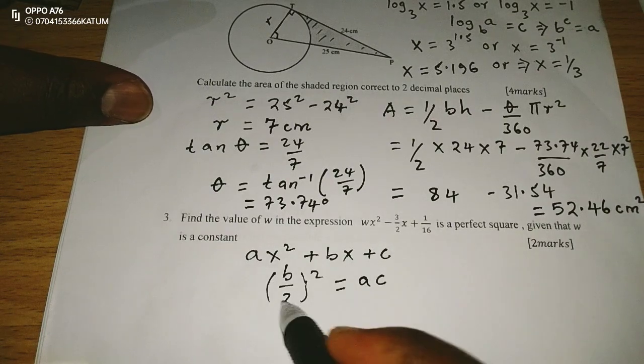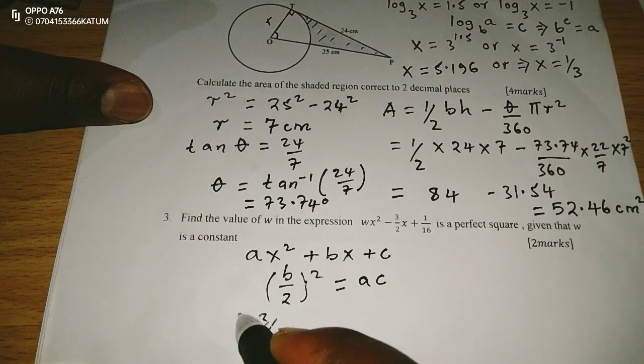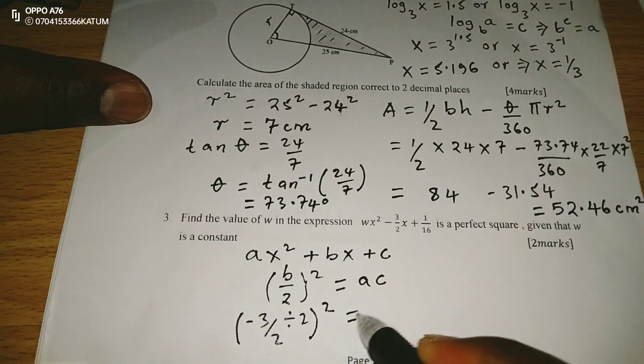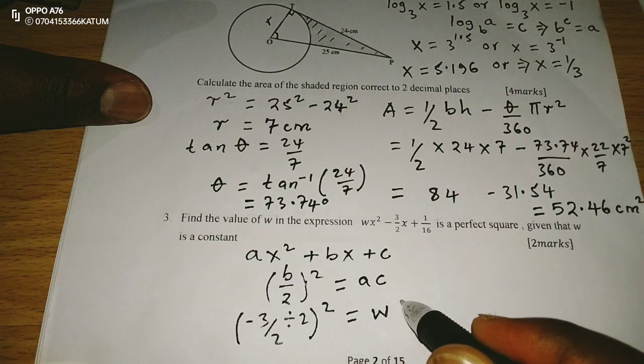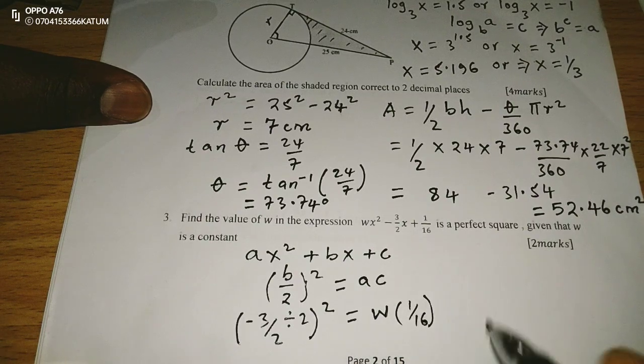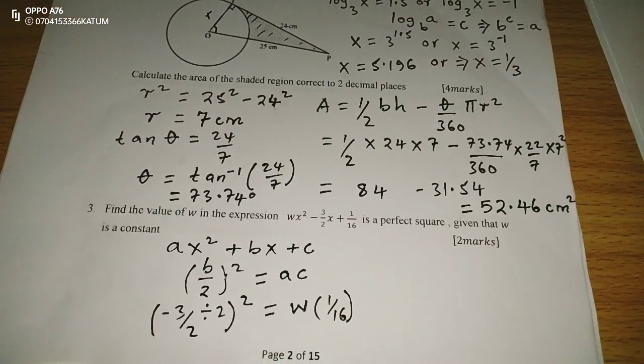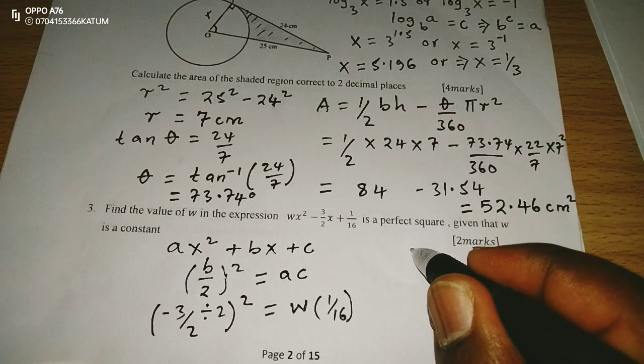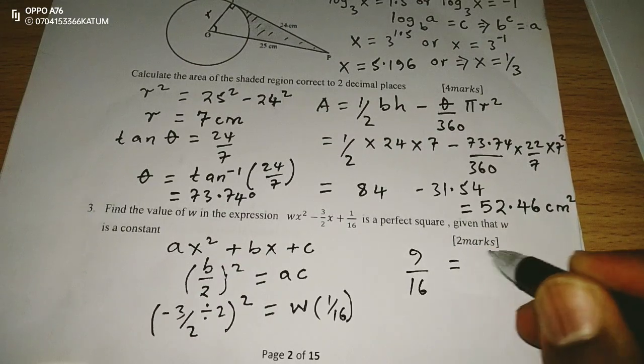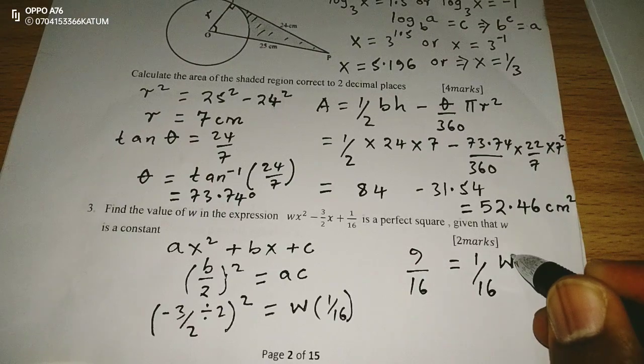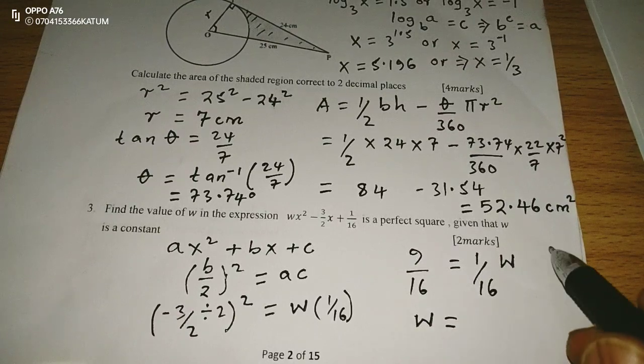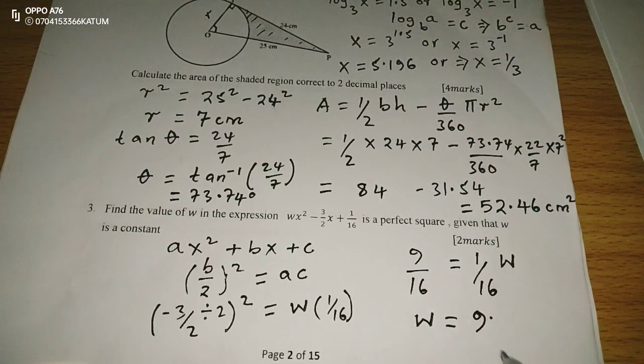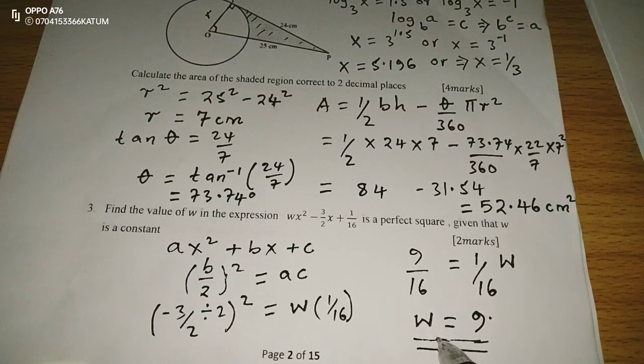So, applying the same for the above expression, which is a perfect square, I should say negative 3 out of 2, which is our b, divided by 2, then squared, should give us the value of a, which is w, multiplied by c, which is 1 out of 16. So, when I evaluate this, I'm going to have negative 3 out of 4, then squared. I'm going to have 9 out of 16, equivalent to 1 out of 16 w. So, to remain with w on that side, I should multiply both sides by 16, and 16 cancels out in both sides, and the value of w becomes 9.